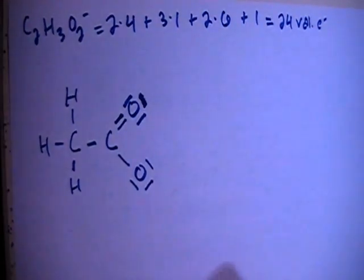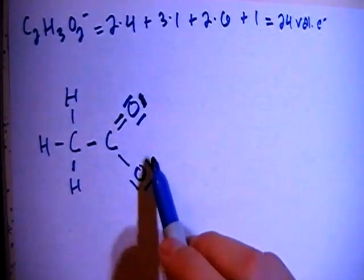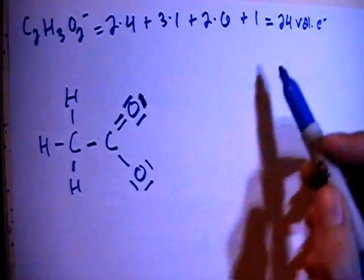Okay, so now if you count them up, there's 2, 4, 6, 8, 10, 12, 14, 16, 18, 20, 22, 24 electrons, which is what we have here as our total, so this should be right.